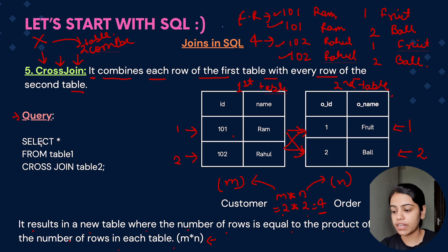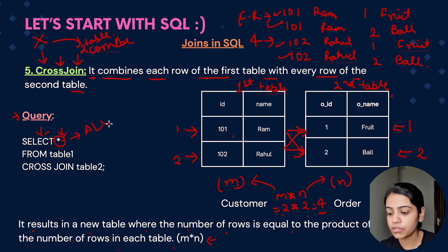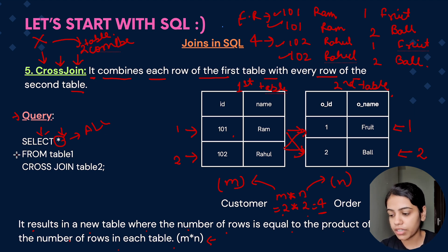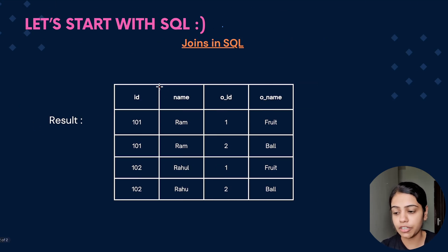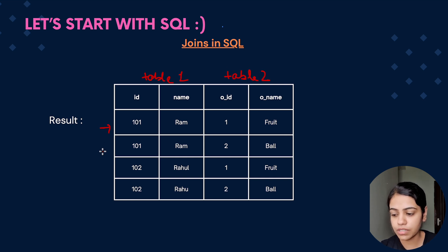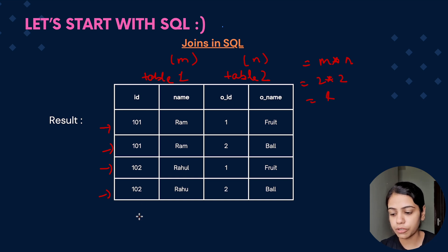Now let's see the query for cross join. First we give the SELECT statement and then provide the columns we want in the final result — here we provide star, which means all columns from both tables. Then we give FROM and provide the first table name, then the CROSS JOIN keyword, then the second table name. This gives a product with the number of rows as table one rows × table two rows, that is m × n, so 2 × 2 = 4.